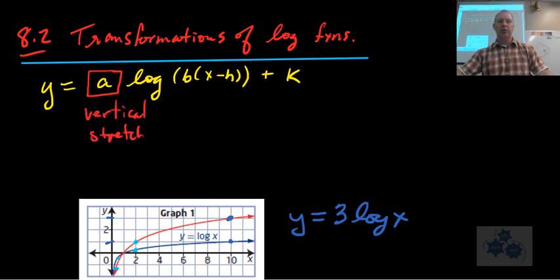So vertical stretch. If A is greater than 1, it pulls it upwards from the x-axis. It pulls it up from x and down from x-axis. If it's between 0 and 1, it compresses it. What happens if it's negative? Which way does it flip? Around the x-axis, flips this way. That's correct. Okay, B. What does B do again?